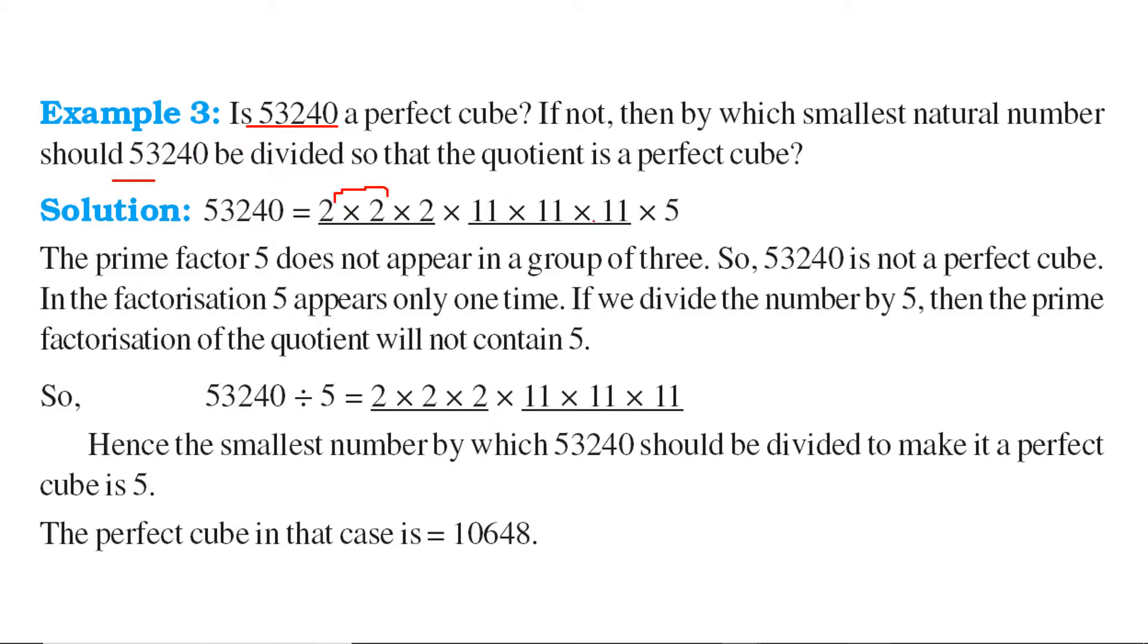2 into 2 into 2, 11 into 11 into 5 if you want to find the factors. It will be like this. Now this 5 is the number which is not forming the cube. So if we divide the whole by 5, we can cancel it out and 53240 by 5 will give you a number which is a perfect cube. So 53240 divided by 5 gives you 10648. This is the perfect cube in this case.